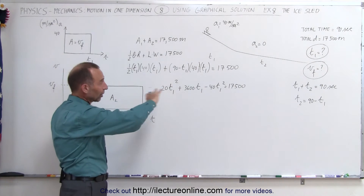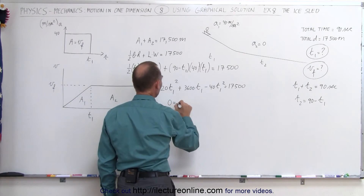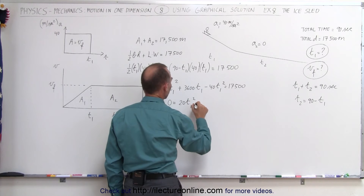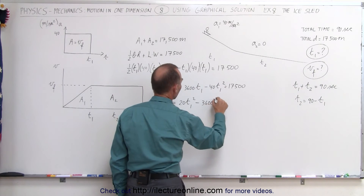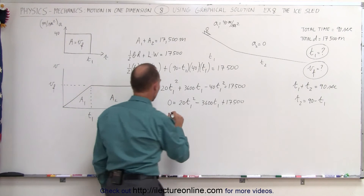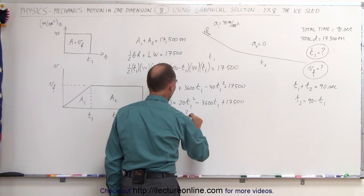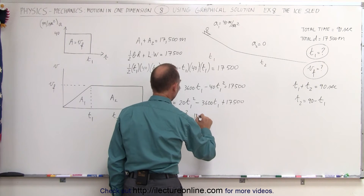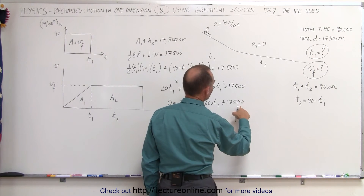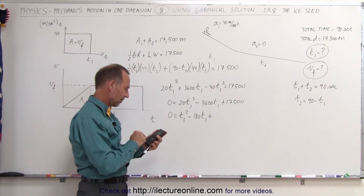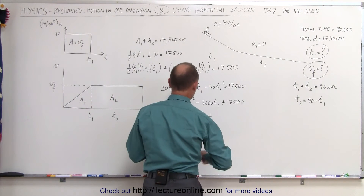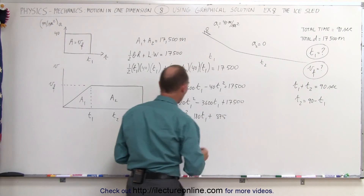Moving everything to one side because this is a quadratic equation: bringing minus 40 across becomes plus 40, subtract 20 from that, giving 20t1 squared. Bringing 3600t1 across gives minus 3600t1, plus 17,500 equals 0. Dividing everything by 20 simplifies this to: t1 squared minus 180t1 plus 875 equals 0. That is our quadratic equation.